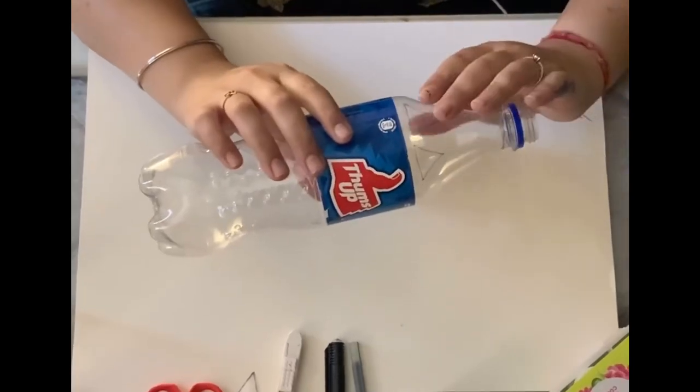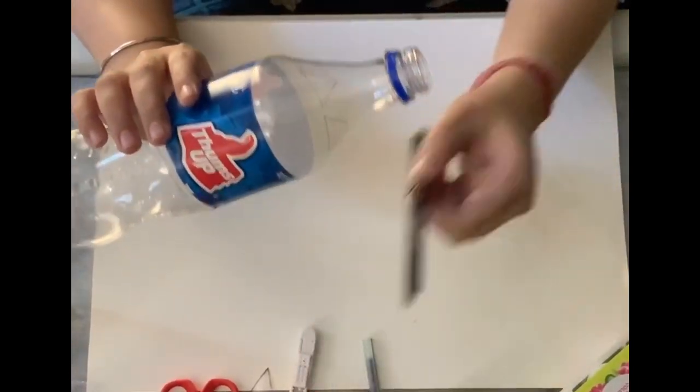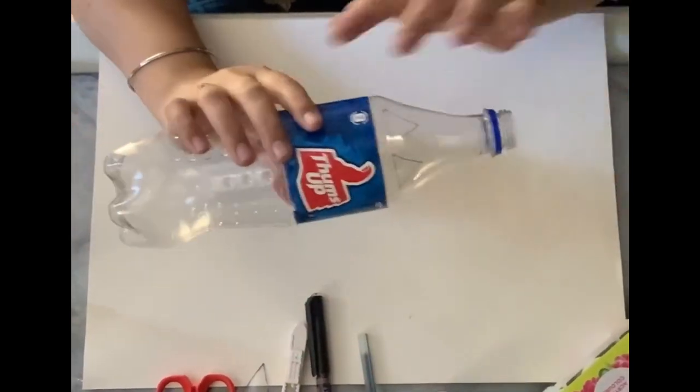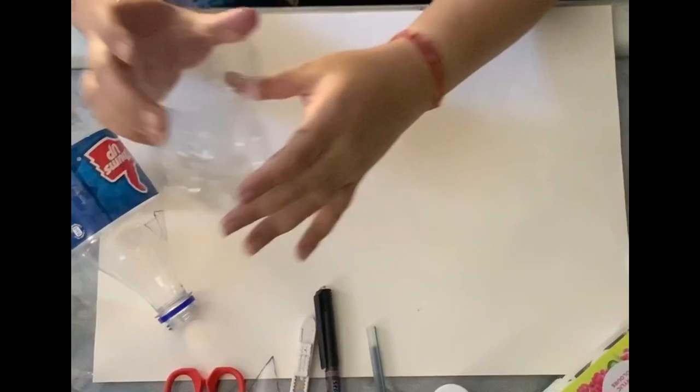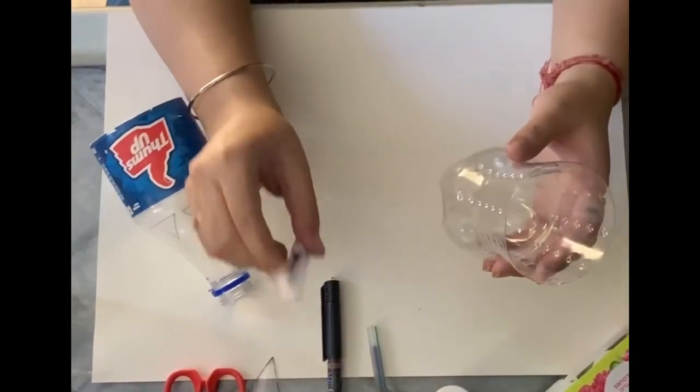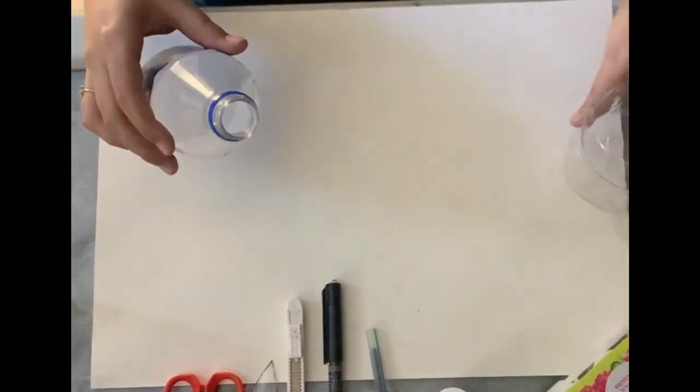So now I am taking this cold drink bottle. What you have to do is, using a permanent marker, mark the bottle into half and then cut the bottle with the help of a thin cutter. Please take help from your parents while doing this. And then keep this part aside.